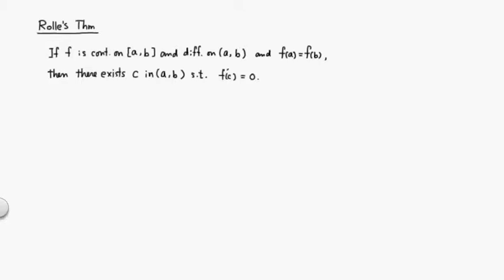If function f is continuous on the closed interval from a to b, and also differentiable on an open interval from a to b, and f of a is actually equal to f of b, then there exists a real number c between a and b such that the derivative of the function at that point is actually equal to 0.